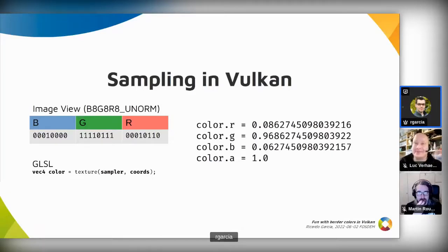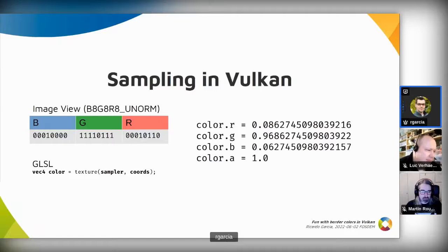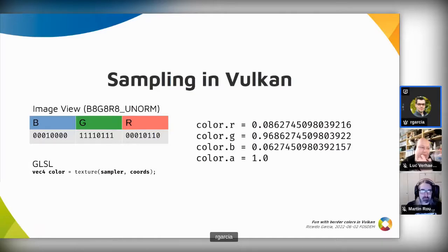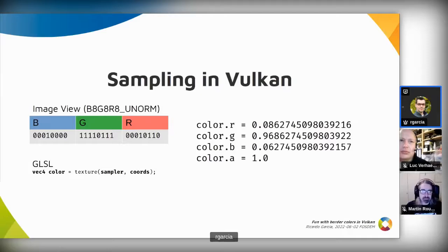That is when all bits are one and the natural number in memory is 255. As you can see in the GLSL code, the result of the operation is a vector of four floating point numbers. Since the image does not have alpha information, it's natural to think that the output vector may have a one in the last component, making the color opaque. It's also worth noting that the sampler argument passed to the texture function in GLSL is actually a combination of two objects in Vulkan: an image view and a sampler object that specifies how sampling is done.